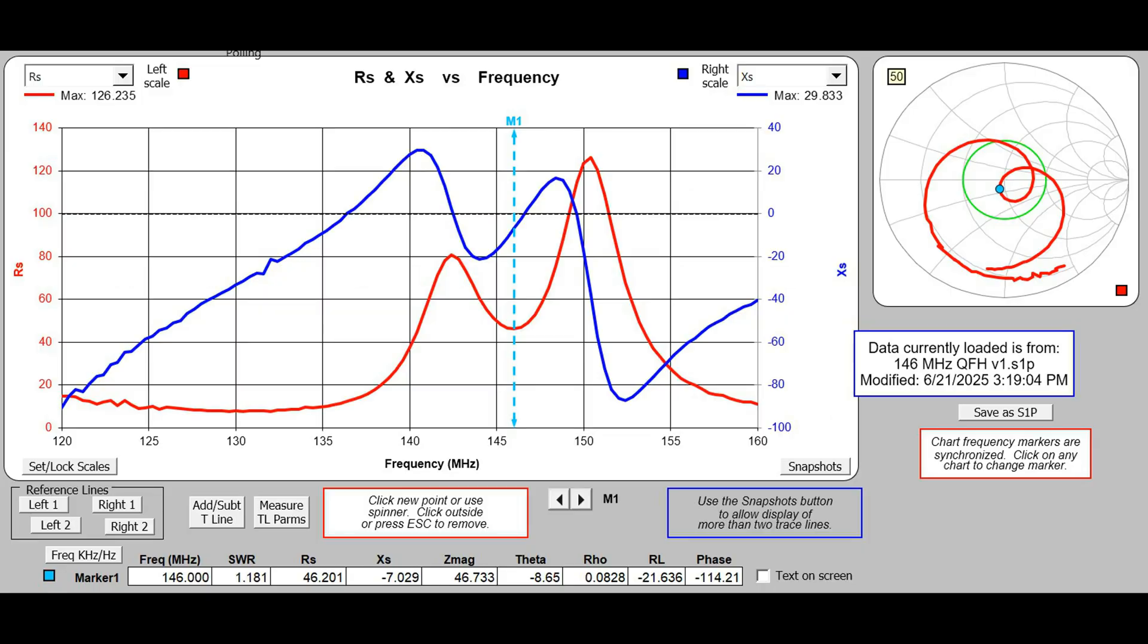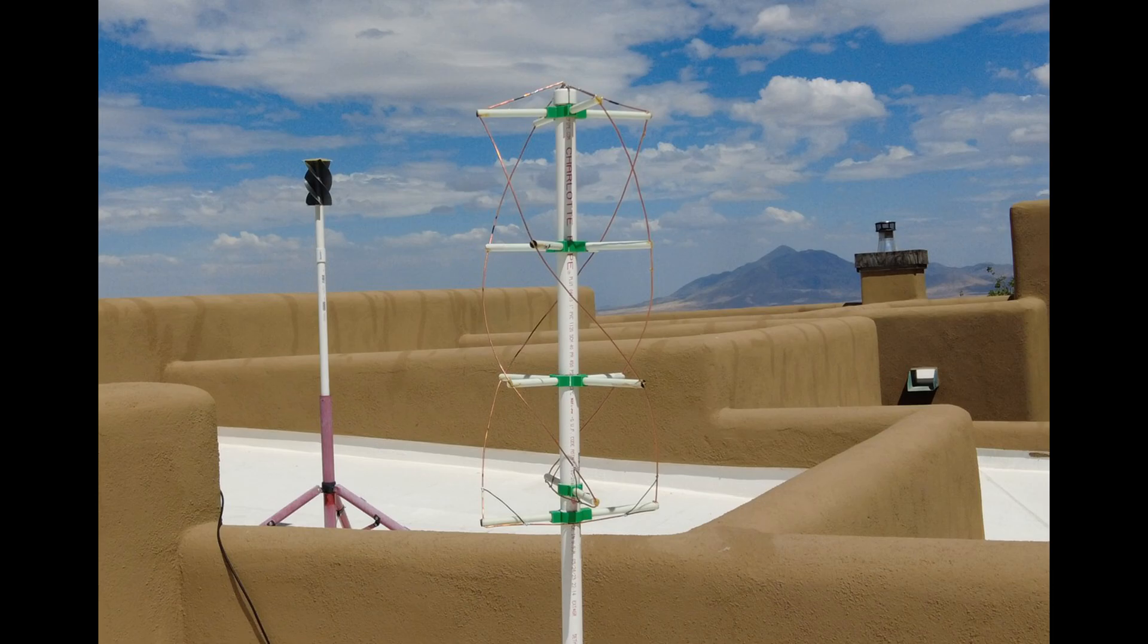Here's the plot of the feed point series resistance Rs and the series reactance Xs. As we wanted, the reactance is almost completely canceled at the desired frequency. If you check out the information bar at the bottom of the plot, that shows the actual data at the frequency where the vertical line is on the plot. And I tried to put that vertical line at the SWR dip.